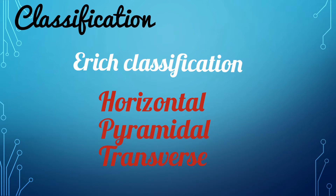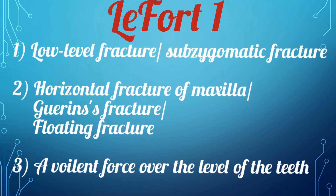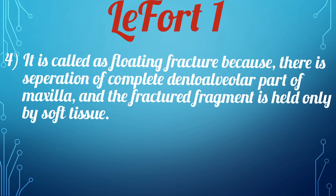The LeFort 1 fracture is also called the low-level fracture or the subzygomatic fracture. It can also be called the horizontal fracture of the maxilla, the Guérin's fracture, or the floating fracture. A violent force applied above the level of the teeth results in this LeFort 1 fracture. It is called the floating fracture because there is a separation of the complete dentoalveolar part of the maxilla, and the fractured fragment is held only by soft tissues.